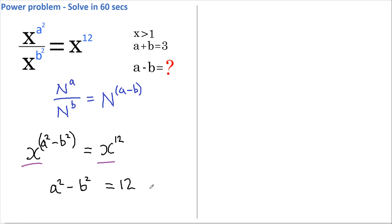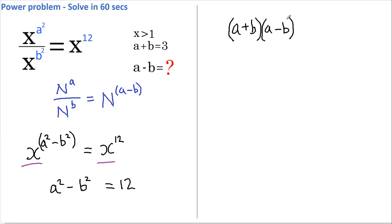To take this problem further, you need to notice that a squared minus b squared is the difference of two squares, and that means we can rewrite this as (a plus b) multiplied by (a minus b). That's because a times a gives us a squared, b times minus b gives us negative b squared, and the cross terms cancel each other out. So this equals 12.